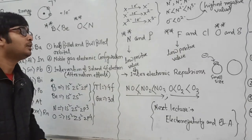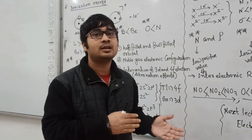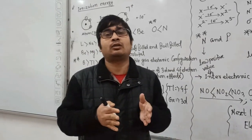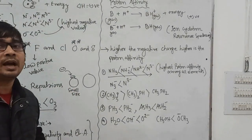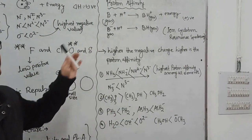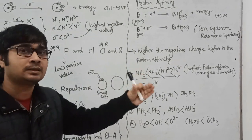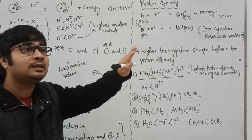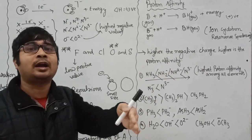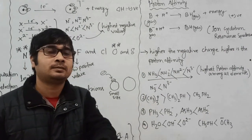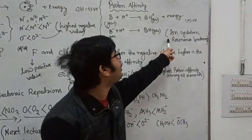In electron affinity, you need to consider a few exceptions, and you need to consider both electronegativity and the size of the atom, because if size decreases, inter-electronic repulsions can make electron affinity lower than expected. Now, another important property that you may not find in normal textbooks is proton affinity. Proton affinity is defined as the energy released during the addition of a proton to an atom or ion in the gas phase, and it can be experimentally determined by ion-cyclotron resonance spectroscopy.